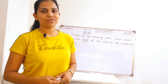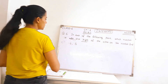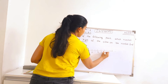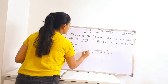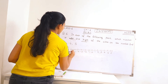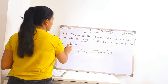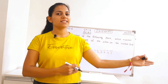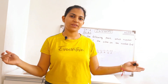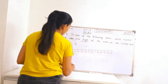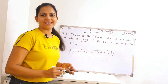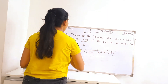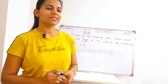Coming to part E. There are two numbers given: minus 6 and 6. Let's check which one is on the right side of the number line. First, draw a number line. Minus 6 is a negative number, so it is on the left side. And plus 6 is a positive number, so it is on the right side. You can clearly see on the number line that plus 6 is on the right side. So our answer will be plus 6. Part E is done.